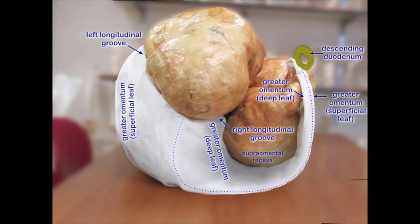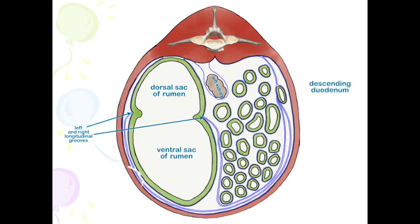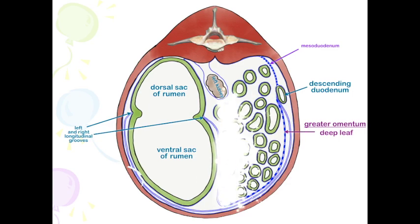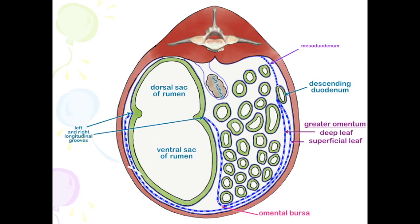In a similar illustration, we can see the dorsal sac of the rumen, the ventral sac of the rumen, our left and right longitudinal grooves, and our descending duodenum suspended by the mesoduodenum. Here we see our deep and superficial leaves of the greater omentum. Between those is the omental bursa, so the ventral sac of the rumen is within that omental bursa — unlike the dog and the horse which have nothing in that bursa. And here's our supraomental recess.